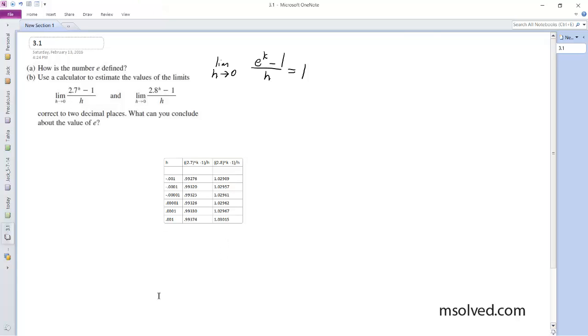Okay, so we run our calculations here. We get about the average, so the limit of h as it approaches 0 for 2.7 raised to the h minus 1 over h is approximately 0.993, and the limit as h approaches 0 of 2.8 raised to the h minus 1 over h is approximately equal to 1.0296.